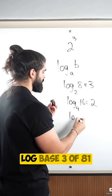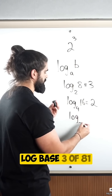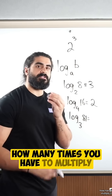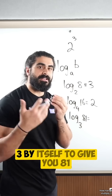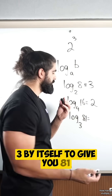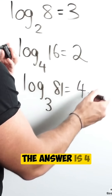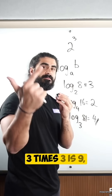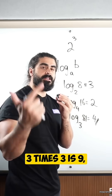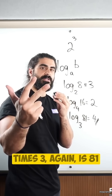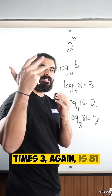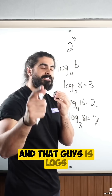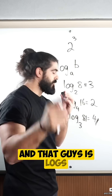Log base 3 of 81. How many times do you have to multiply 3 by itself to give you 81? The answer is 4. 3 times 3 is 9, times 3 is 27, times 3 again is 81. And that, guys, is logs.